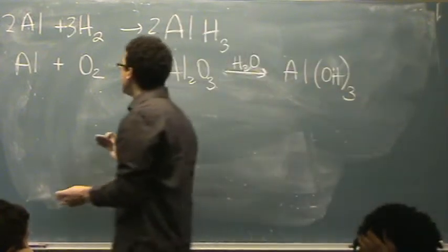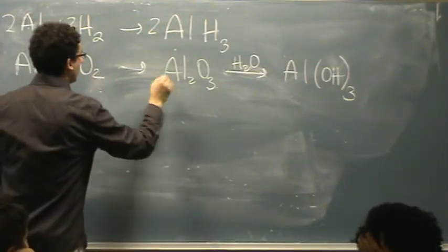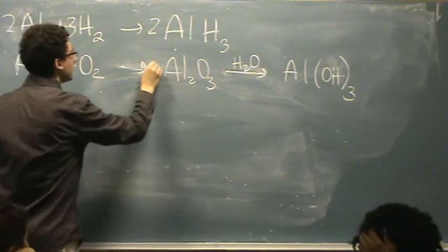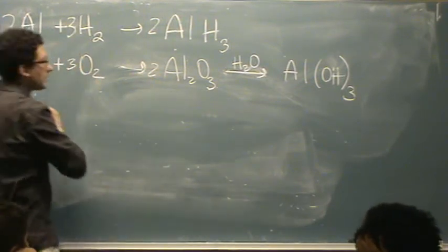It's totally messed up. So, if I put a 3 here, and a 2 there, and a 4 here, that balances the first one.